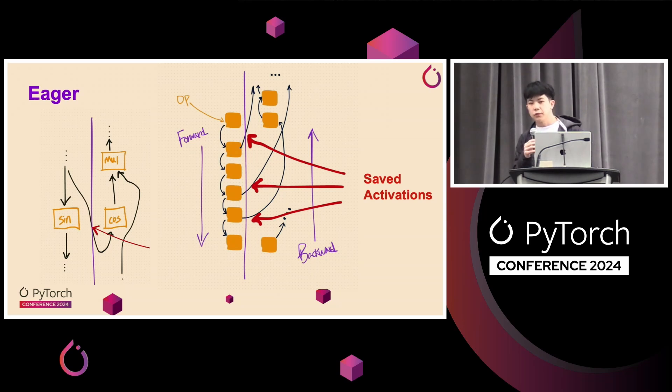So as you do forward over time, like doing more operations, you'll end up saving more and more activations. So for example, on the diagram on the right here, these orange boxes represent operations, and the black arrows represent sort of input tensors and output tensors to those operations. And those arrows that cross over the middle purple line represent activations that need to be saved for backward. So as you can see, in this case we are saving three activations for backward.